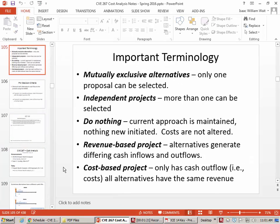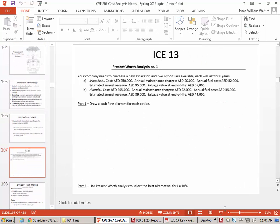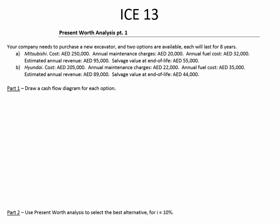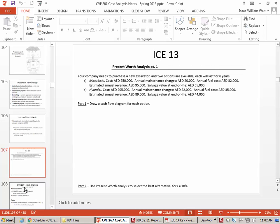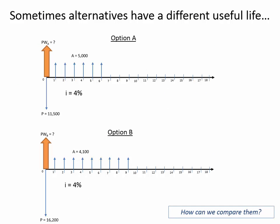Let's take a look at what we did last time. We had this in-class exercise where we were comparing Mitsubishi and Hyundai. Both options had the same useful life, so we were taking all of the cash flows to the present. We pick the one that gives you the most money in the present. But when things don't have the same useful life, we have to make them the same useful life before we take everything to the present.